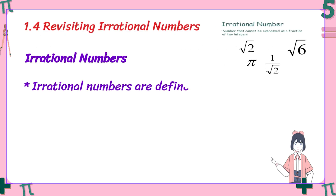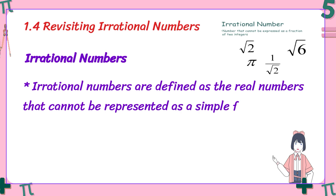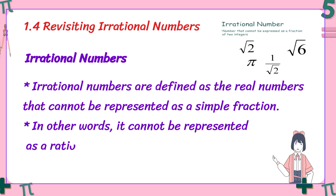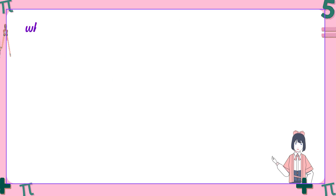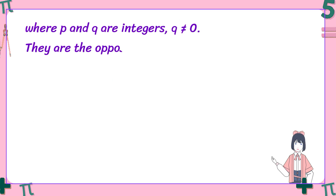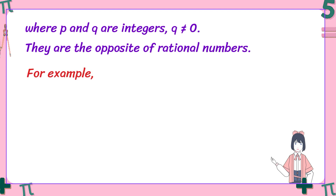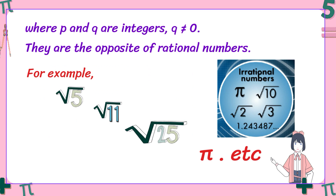Irrational numbers are defined as real numbers that cannot be represented as a simple fraction. They cannot be written in p by q form. Some examples are root 2, pi, 1 upon root 2, and root 6. Here p and q must be integers and q must never be equal to 0. So irrational numbers are the opposite of rational numbers.